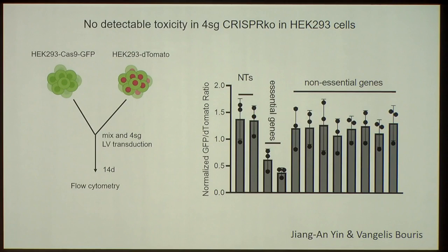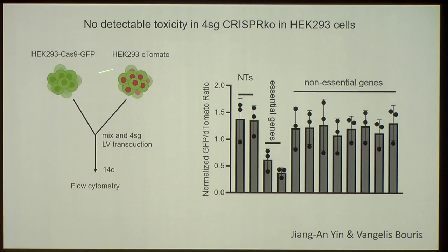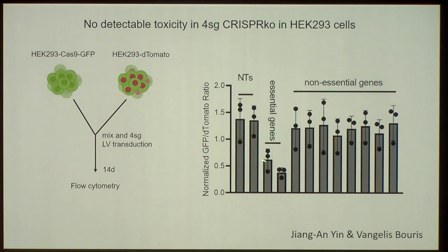We were worried about toxicity, because with four guides you are making four double-strand breaks. But it doesn't kill the cells. In a competition assay with green and red cells, inducing knockout in one cell type shows that if you knock out essential genes, there is a drop in viability as expected, but if you knock out non-essential genes, essentially nothing happens. There is no toxicity.